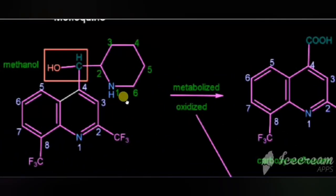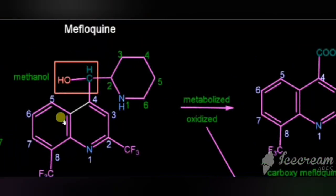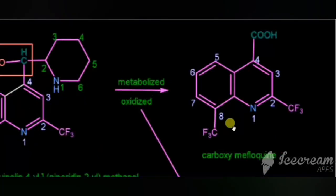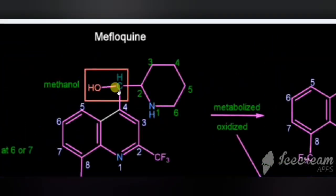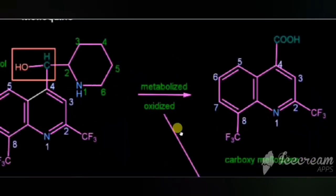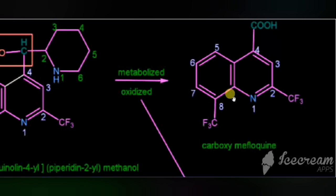Now we will see the metabolism of mefloquine. Mefloquine undergoes oxidation to form a metabolite called carboxymefloquine. In the 4th portion, methanol is attached and piperidine is attached to it. The whole group is oxidized, giving a carboxy group in the 4th position — that is called carboxymefloquine, the metabolite of mefloquine.